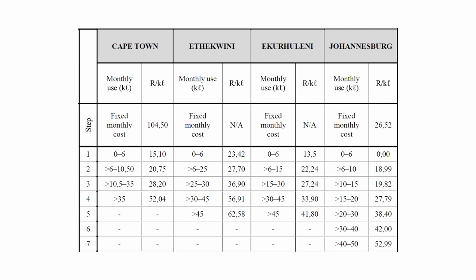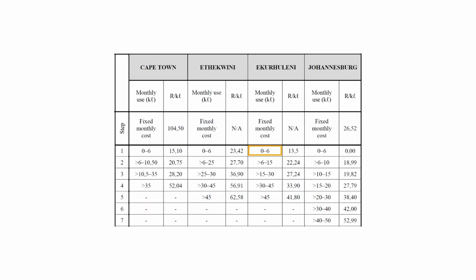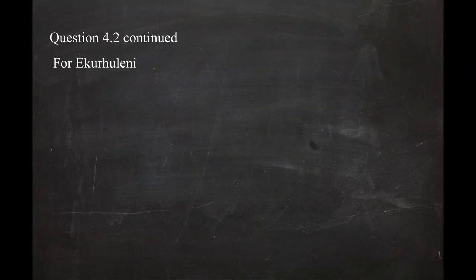Next, calculate the total cost of water consumption for Ekurhuleni. In step one, the range is zero to six kilolitres. The tariff is R13.50 per kilolitre. The cost for step one is 6 kilolitres × R13.50 = R81.00.